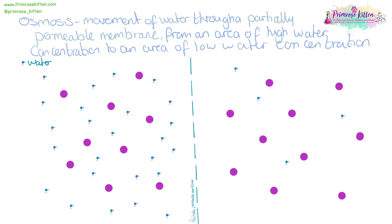Osmosis is specifically the movement of water through a partially permeable membrane from an area of high water concentration to an area of low water concentration. You'll notice this partially permeable membrane — the pores in it aren't large enough for the solute to move through, so water is the one that moves through. This sort of thing can happen in root hair cells where we're looking at the uptake of water.